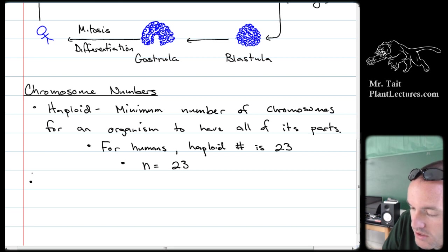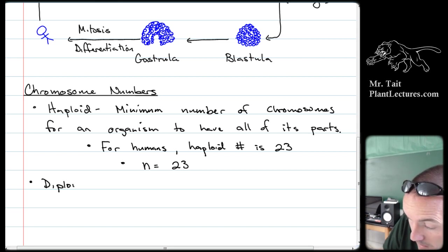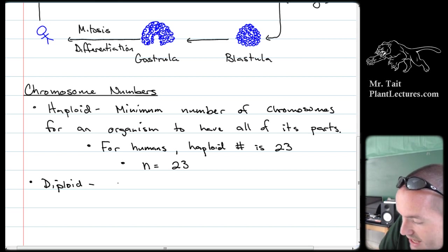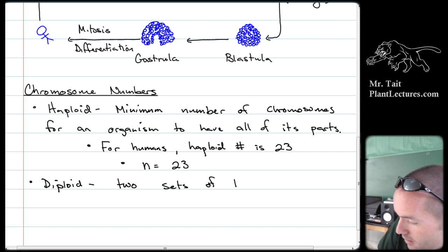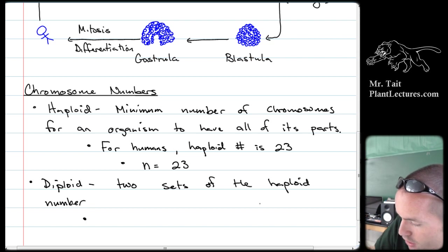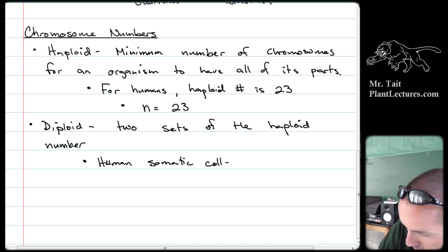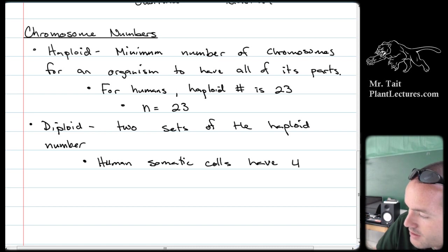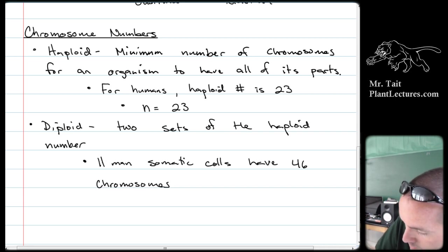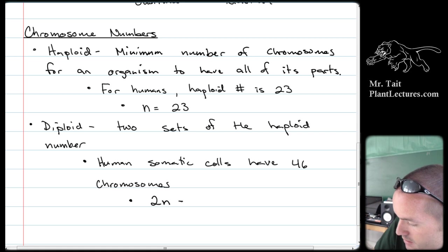Humans are not haploid — humans are diploid, which means two sets of the haploid number. Human somatic cells have 46 chromosomes, written as 2N = 46.